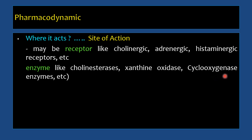Cyclooxygenase enzymes are involved in the synthesis of prostaglandins. Like receptors, these enzymes may be activated or blocked according to requirement. If the activity is decreased, we will try to activate it; if the activity is increased, we will try to block it.